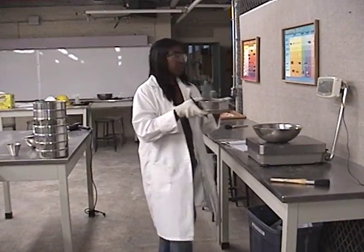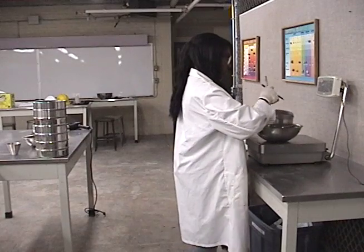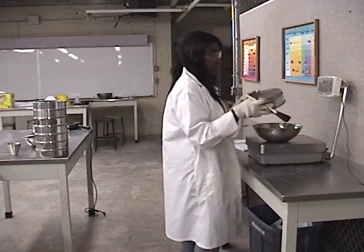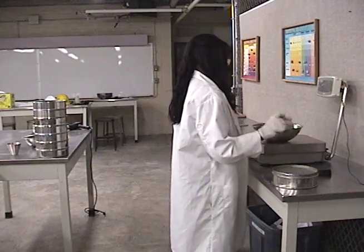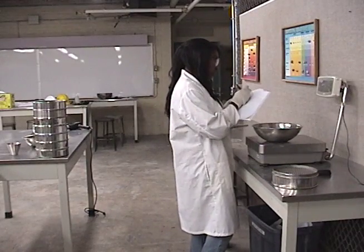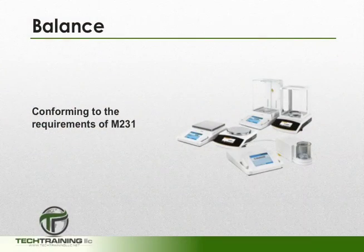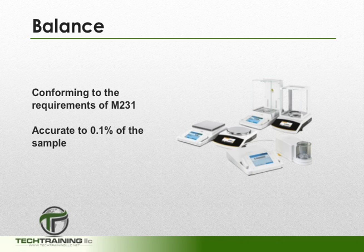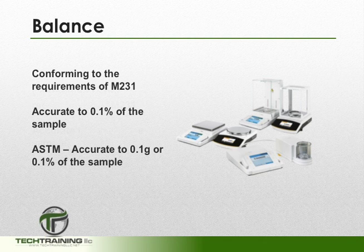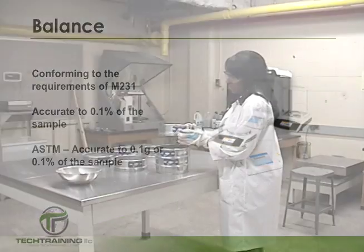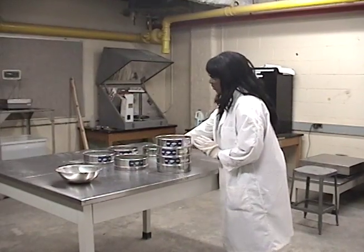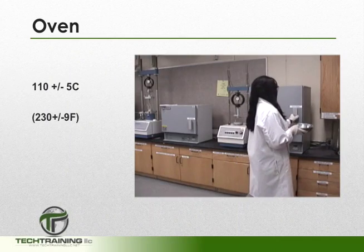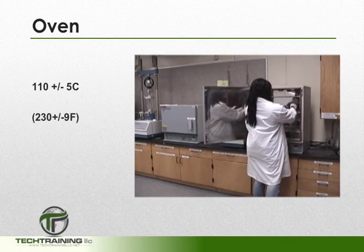Now that we understand the use and application of AASHTO T27, let's quickly talk about the equipment necessary to perform this test, before moving on to a detailed performance review. First, we'll need a scale conforming to the requirements of M231, accurate to 0.1% of the test sample. For ASTM, the scale must be accurate to 0.1 grams or 0.1% of the test sample. We'll also need the appropriate sieves, as well as an oven with a capable range of 110 ±5 degrees Celsius.